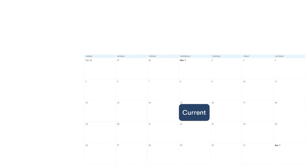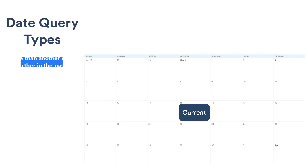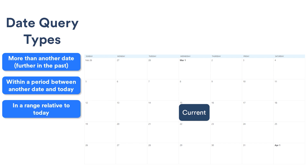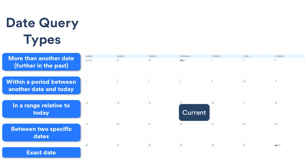Now that you know how to add the fields, let's learn more about how to put them to use. You can think of date queries as falling into five buckets: dates that are more than or further in the past than another date, dates that fall within a period between another date and today, dates that fall in a range relative to today, dates that fall between two specific dates, and an exact date. Let's see examples of date queries.